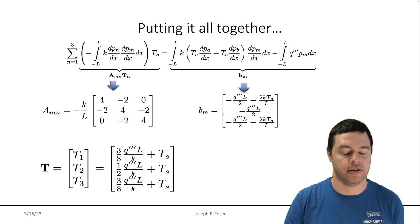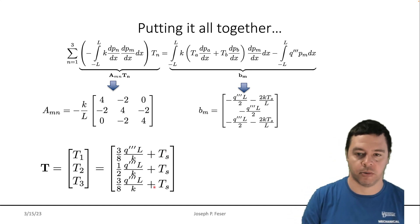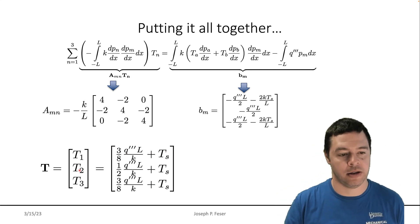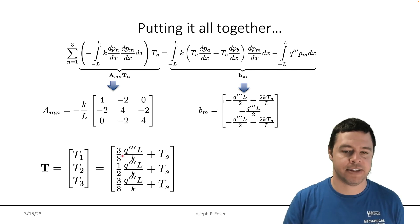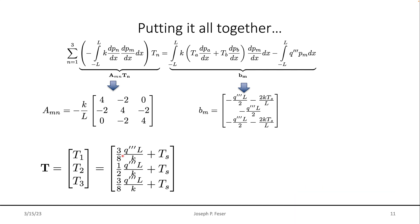It turns out that the temperature at the first node is three eighths of whatever it is, Q triple prime L over K plus whatever the surface temperature was. And then at the midpoint, it's half rather than three eighths and so on and so forth. How does that stack up with the exact solution?